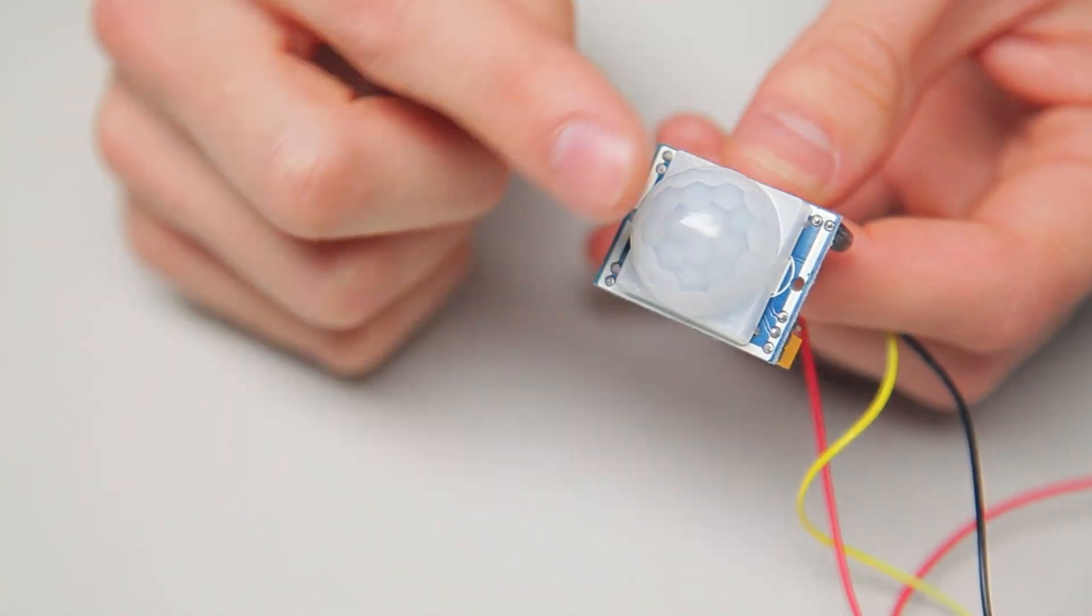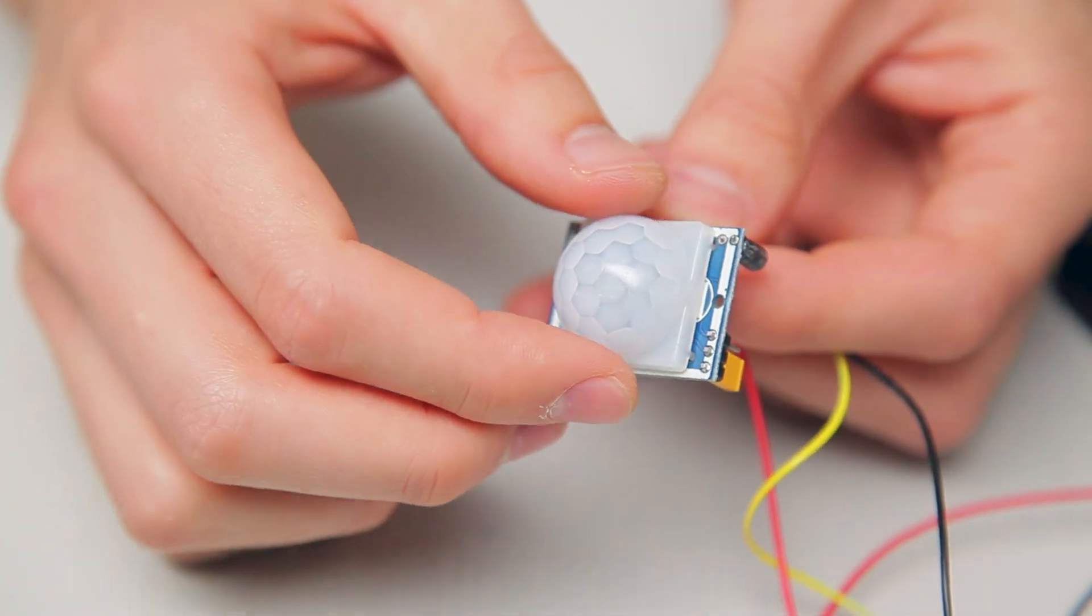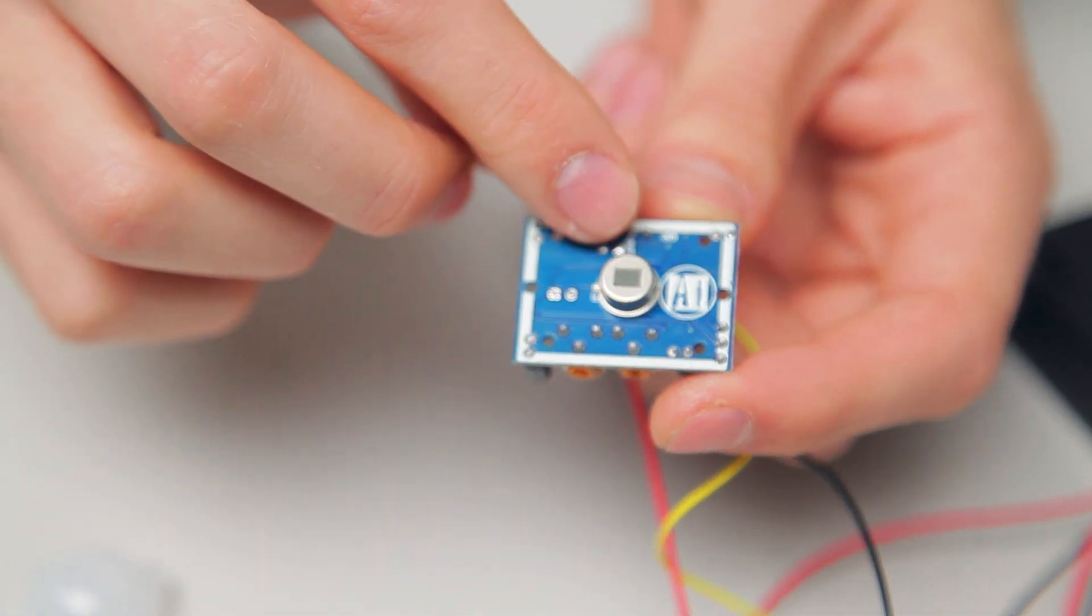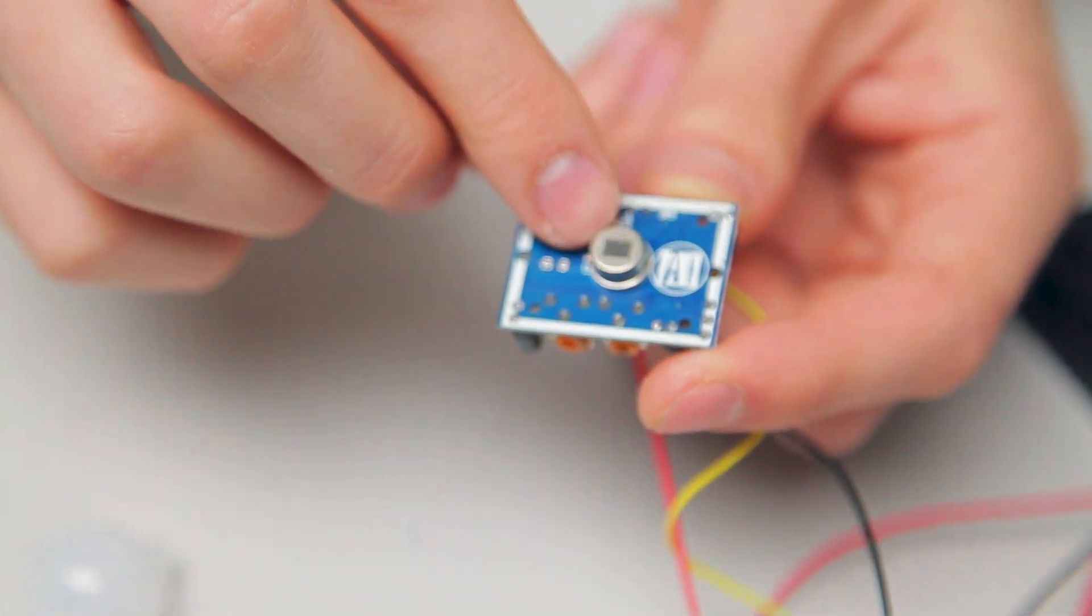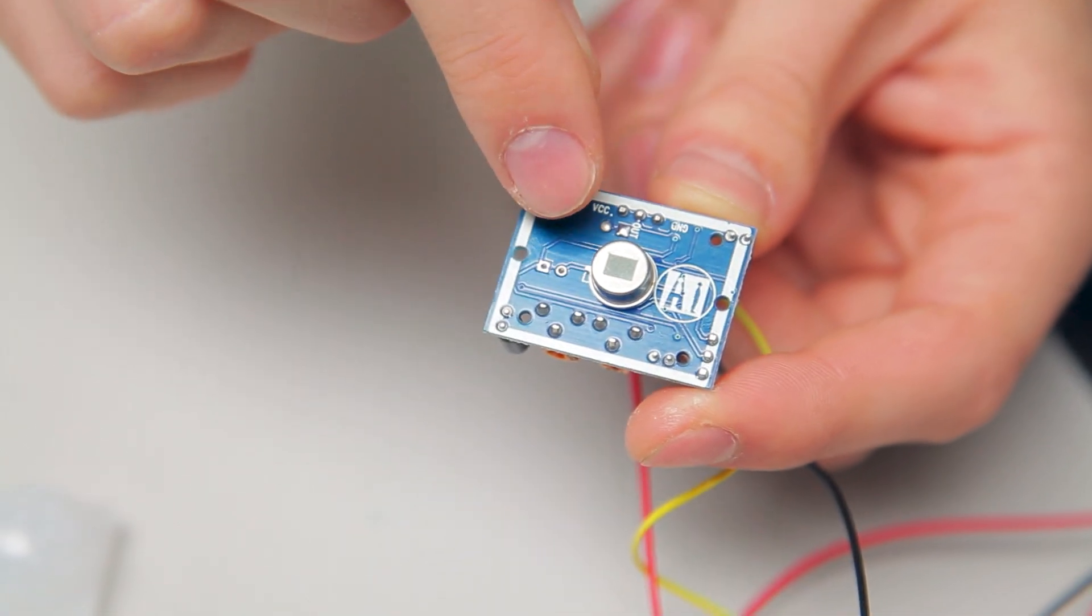Now this plastic dome on the top isn't the actual sensor. To see the sensor you need to remove the plastic dome. If you look inside you should see a metal cylinder with a shiny little black rectangle in the center. That black rectangle, that's your sensor.